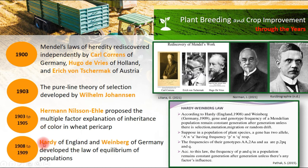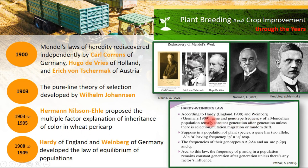Between 1908 and 1909, Hardy of England and Weinberg of Germany developed the law of equilibrium of populations — the Hardy-Weinberg law. According to them, gene and genotype frequency of a Mendelian population remain constant generation after generation unless there is selection, mutation, migration, or random drift.